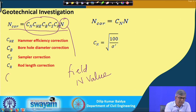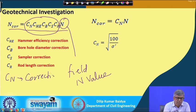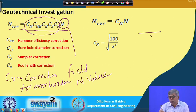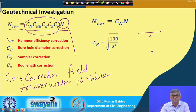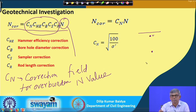Cn is the correction for overburden. If a test is carried out at a shallow depth and at a deeper depth, the overburden will be different and will influence the N value. At a shallow depth, with less overburden, you require fewer blows to penetrate 300 millimeters, whereas if the test is carried out deeper, because of the high confinement you require more blows to penetrate the same depth for identical soil.